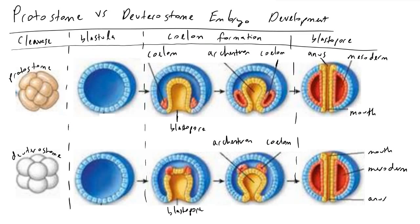Understanding embryo development is a major topic, especially if you're a biologist trying to make a cladogram, because we can very readily see many key distinctions between organisms and species that help us classify life. What I'm going to do in this video is walk through one of the biggest distinctions that a biologist can make when studying an embryo: determining whether or not it's a protostome or a deuterostome.